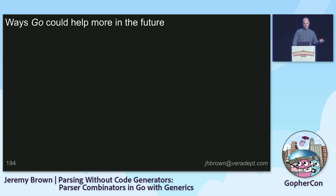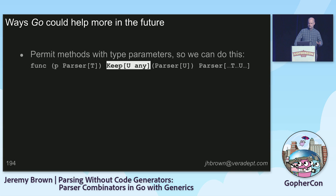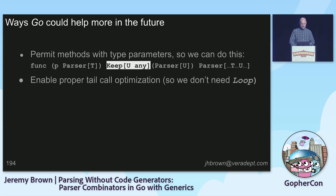A couple of things I touched on as we went through: I wish there were a way to permit methods to have type parameters — it would make things a lot tidier. And I wish we could have proper tail call optimization. But I realize that my wish list is just mine.